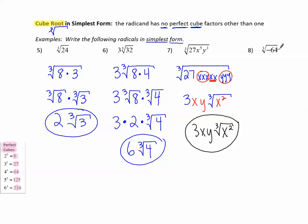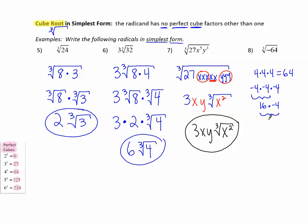Remember when we couldn't take the square root of negative 64? With cube roots, we can take the cube root of a negative number. 64 is a perfect cube because 4 times 4 times 4 is 64. Negative 4 times negative 4 is positive 16, and positive 16 times negative 4 is negative 64. So negative 4 cubed equals negative 64, which means the cube root of negative 64 is negative 4.